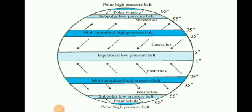In this way pressure belts are formed on the surface of the Earth. This figure is from your textbook, page number 17 — go through it in detail. Read page number 18 two to three times very carefully, and draw figures 4.2a and 4.2b in your geography practical copy — that means temperature zones and pressure belts, and planetary winds. Draw both figures from page 17 in your copy. Thank you.